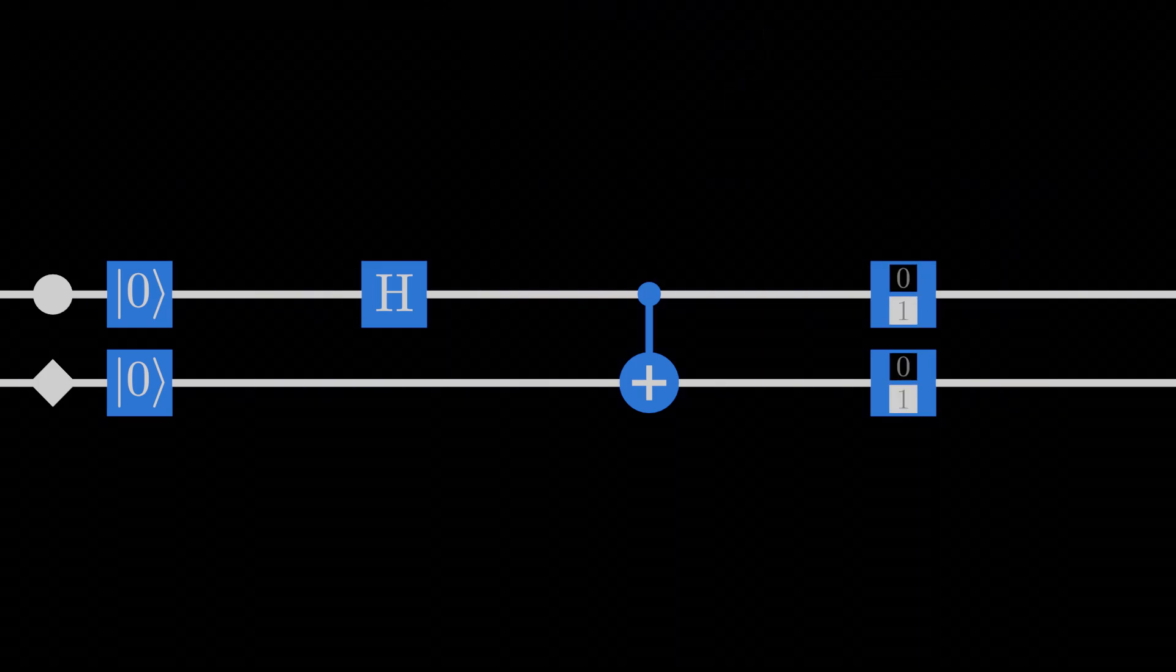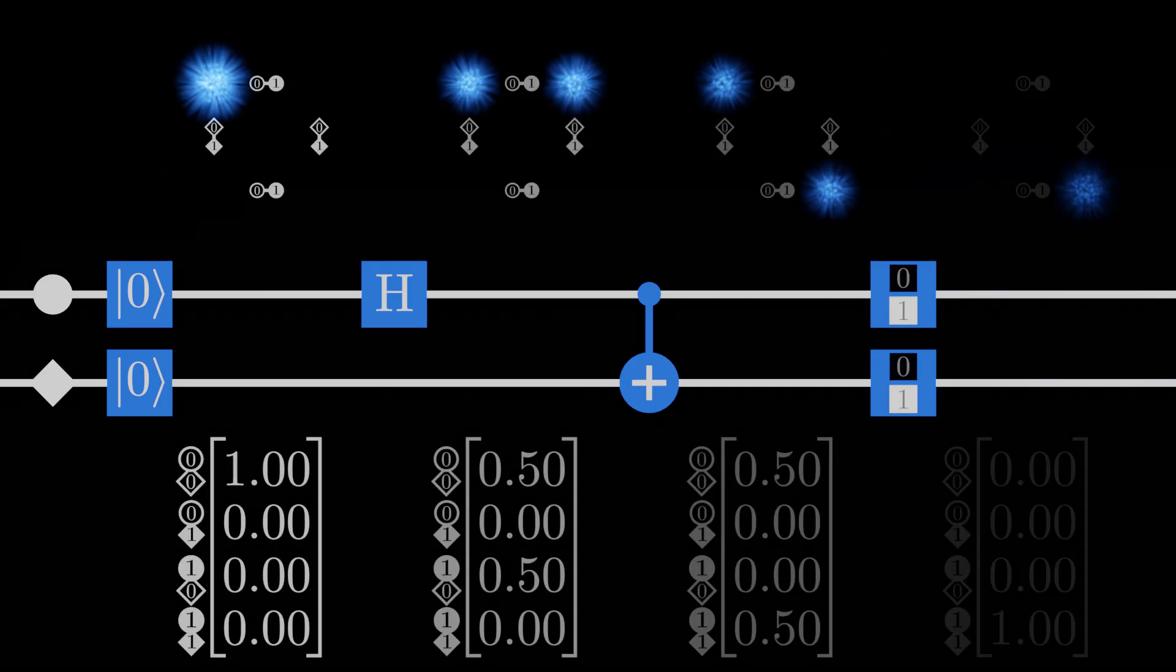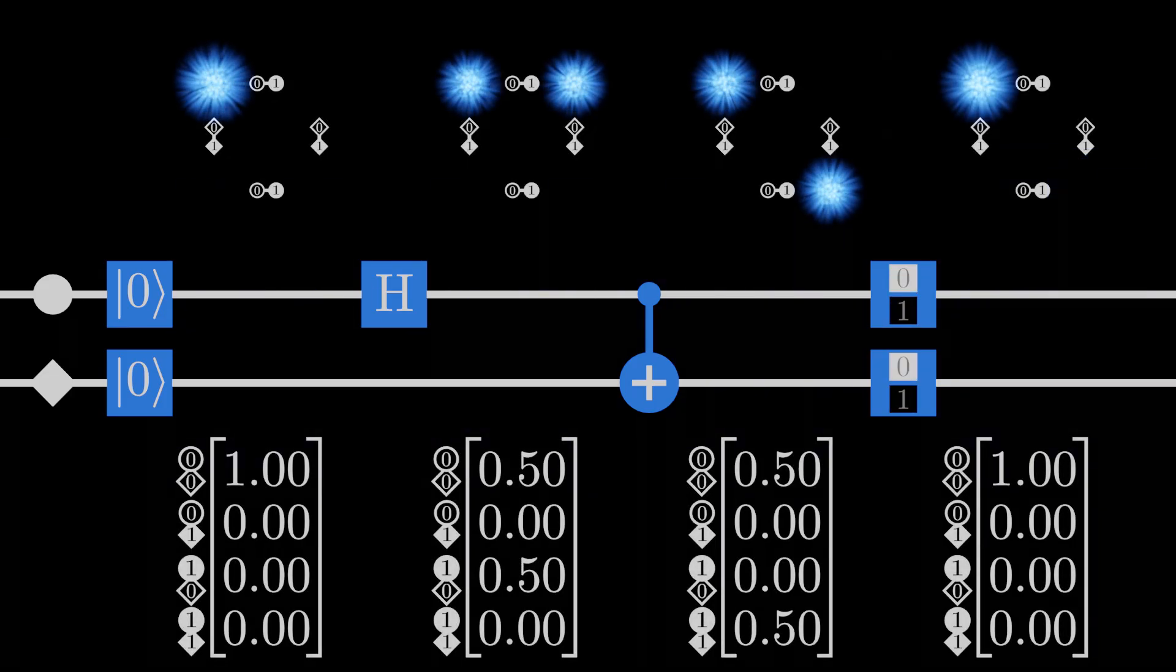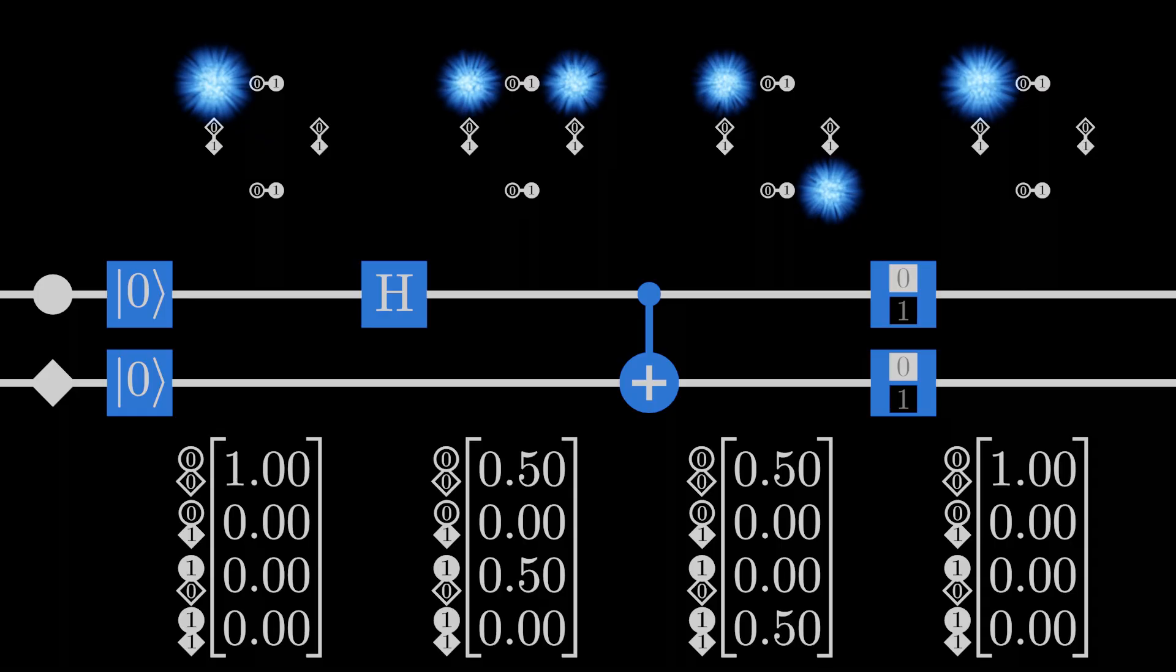To start, we'll represent a system of qubits using a collection of probabilities of how likely each combination of measurements is. We'll later look at what this explanation can't explain and use that to expand it appropriately.